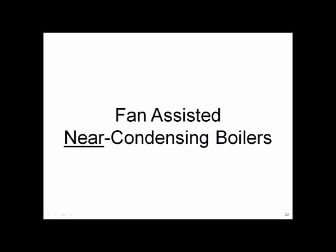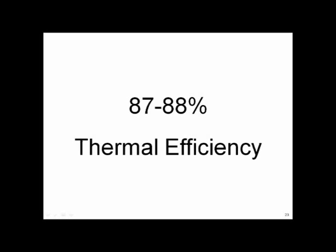So let's push this concept of fan-assisted combustion as far as we can. Remember: roughly 90% of the BTUs in natural gas is sensible and 10% is latent hidden heat. A non-condensing appliance pushing it as near condensing as possible — this is like 15 to 20 years ago — could achieve around 87% to 88% thermal efficiency, getting about all the sensible BTUs we can get.